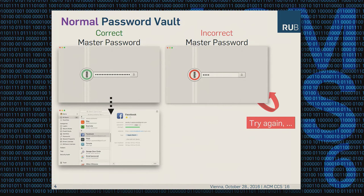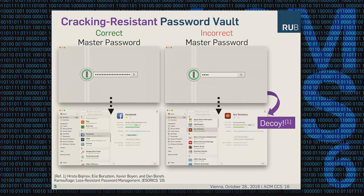In contrast to this, there are cracking-resistant password vaults. For the correct master password case, the same happens. However, if we use an incorrect master password, the vault still decrypts but does not deny access — instead it shows a decoy. This concept was introduced by Bochenov et al. at USENIX 2010, and they used a dedicated predefined set of decoy vaults in their system called Camouflage.